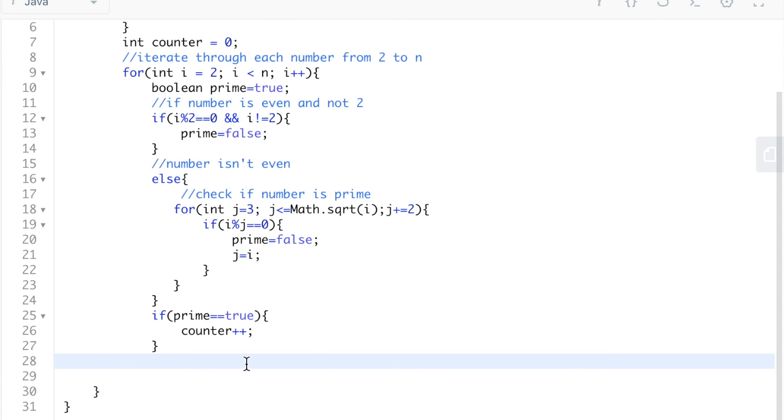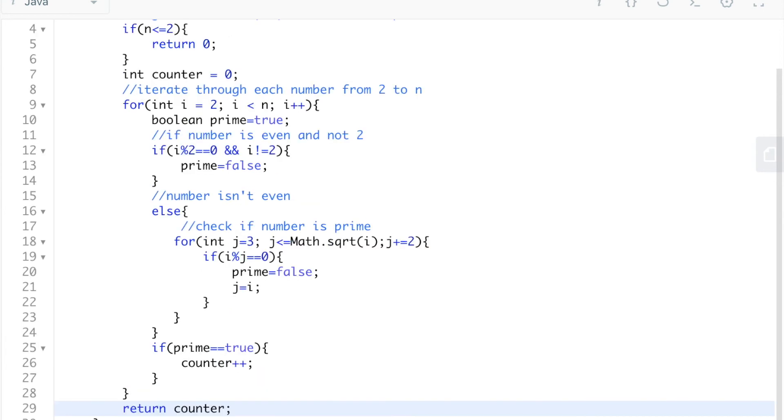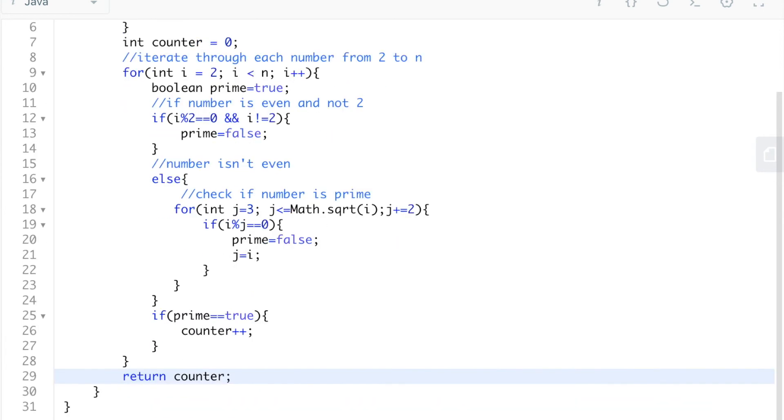Now, at the very end, we're going to see if the number is prime, and in the case that it is prime, we're going to increment our counter by 1. And finally, we're going to return counter. When we run this code, there we go. It works.